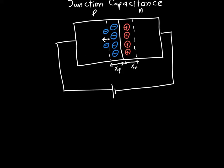We saw the general procedure for calculating capacitance in the last video: we can define it as the change in charge that occurs in response to a change in voltage. The change in charge is fairly easy to calculate here. Let's talk about the n region first.